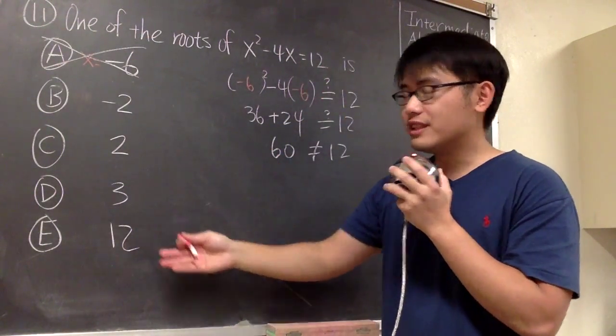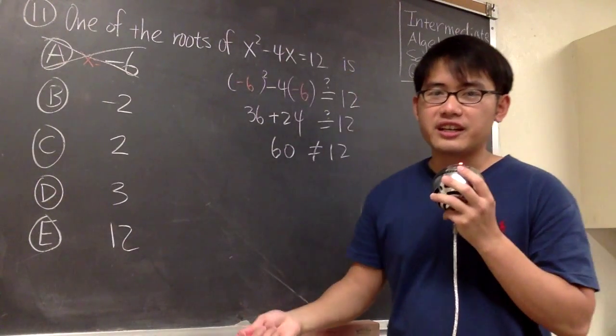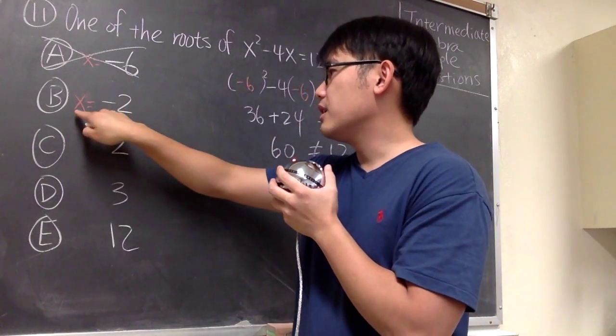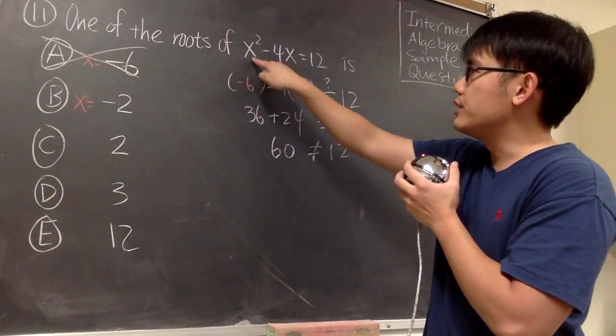And now we have four more choices, we just have to pick one of them and then plug into the equation and do the check again. Let me just pick B. So we are saying is x equal to negative 2 or not. I will plug in negative 2 into this x and that x.